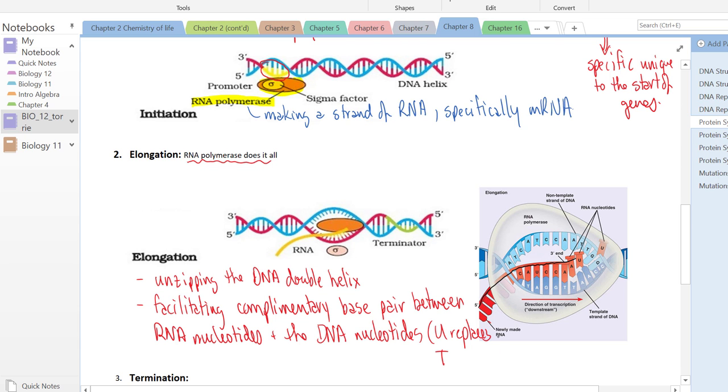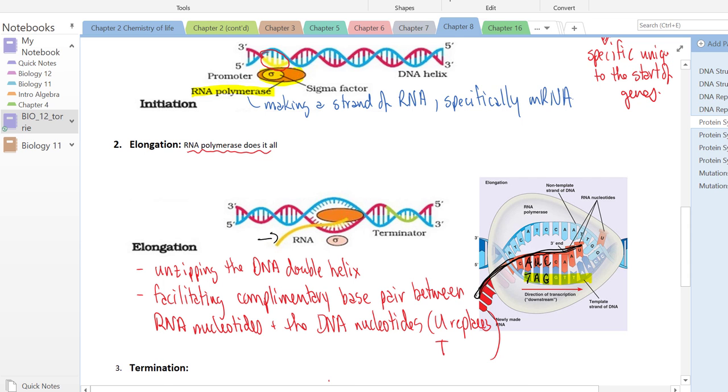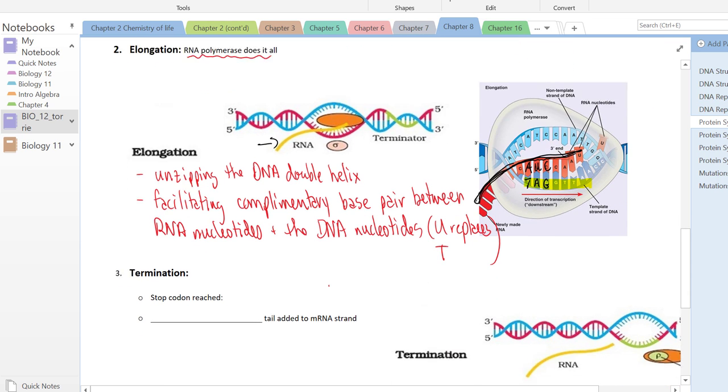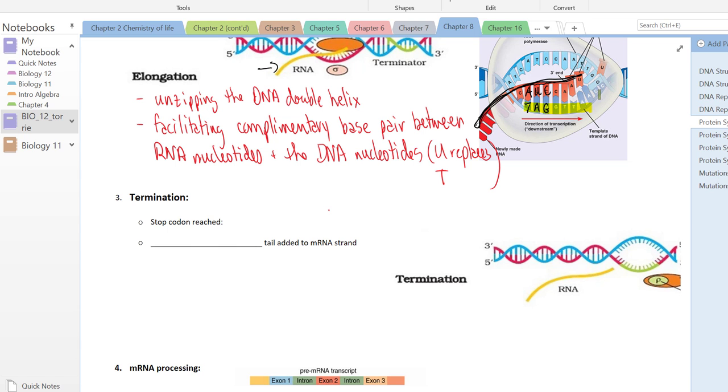Everything is the same in terms of complementary base pairing with the exception that U replaces T. You can see here highlighted down below is our genetic code, and in red it's showing our RNA strand. You've got a T here which produces an A in the RNA strand, and an A here produces a U in the RNA strand. Here's our strand of mRNA that's forming, and that's elongation.